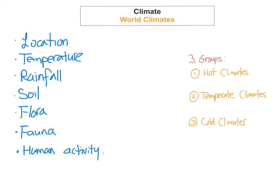In my other videos I'm going to pick one climate from each group and break it down into location, temperature, rainfall, soil, flora, fauna, and human activity. This will make up a detailed answer if you get asked about a hot climate, a temperate climate, or a cold climate.